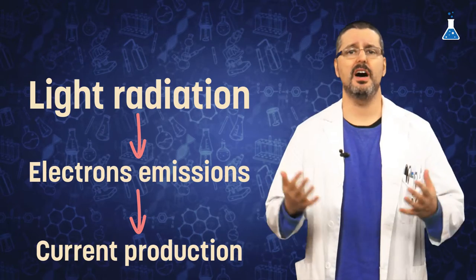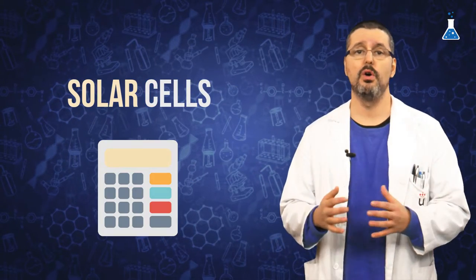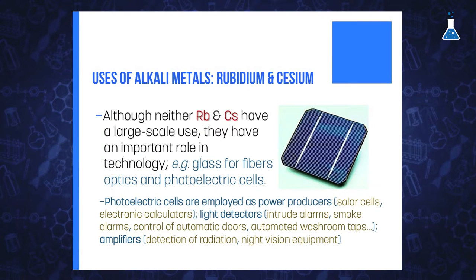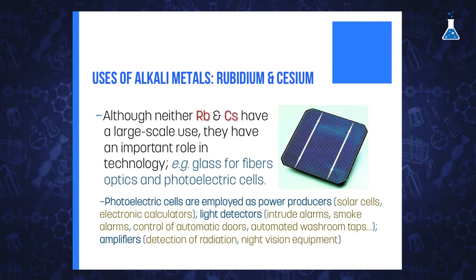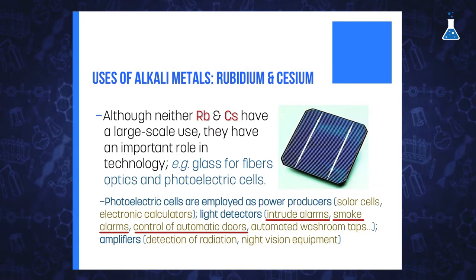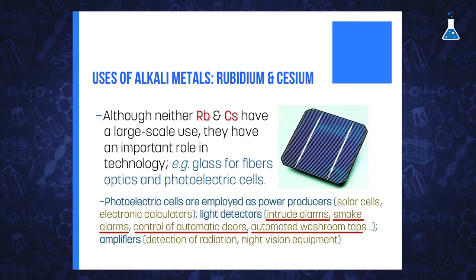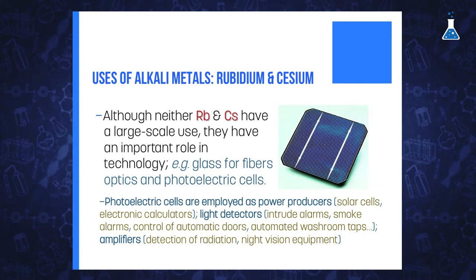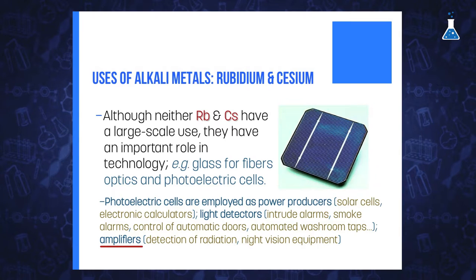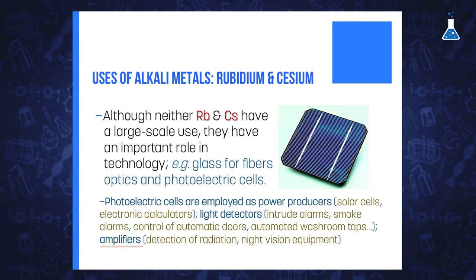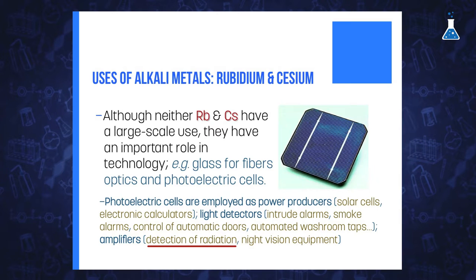Photoelectric cells are employed as power producers, for example in solar cells or electronic calculators. They can also be used as light detectors in things such as intruder alarms, smoke alarms, to control automatic doors at the grocery store, automated washroom taps, and so on. In addition, photoelectric cells can be used as light amplifiers, which are mostly employed in scientific applications such as detecting different kinds of radiation or in night vision equipment.